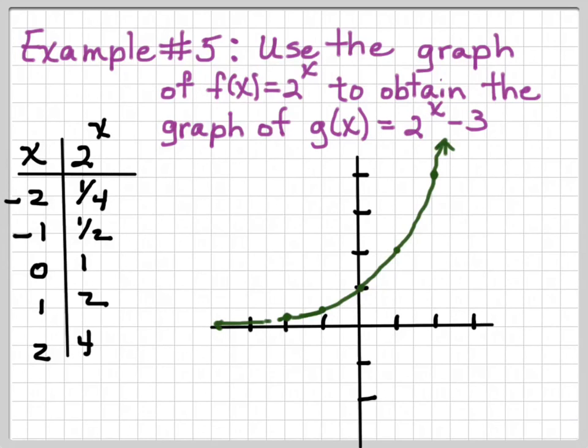Now, in order to do my shift, or my transformation, I'm going to take each one of my points. I'm going to keep the same x coordinate. I'm just going to shift the point down 3. So that's going to give me these points.